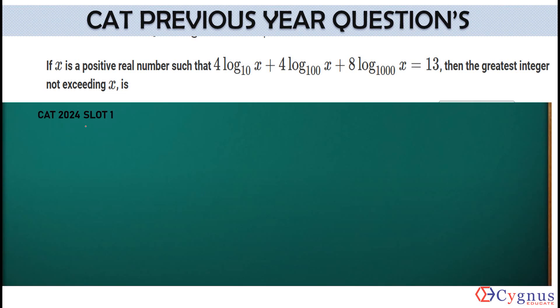Hi, it's a question of CAT 2024 slot 1. Fine, let's see what's given here. If x is a positive real number such that the sum of these three logs is given equal to 13.